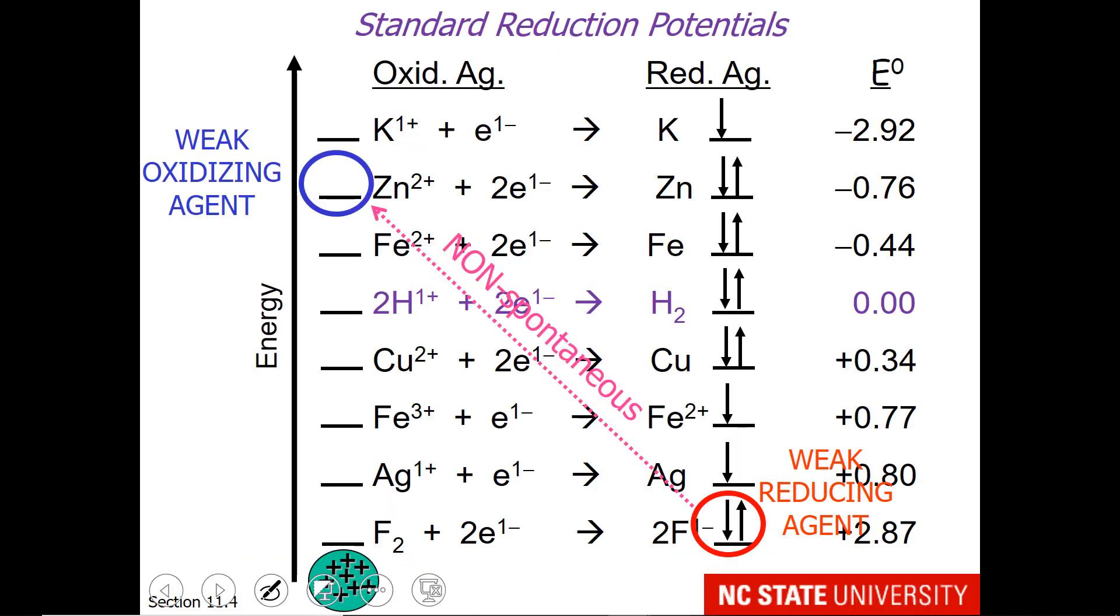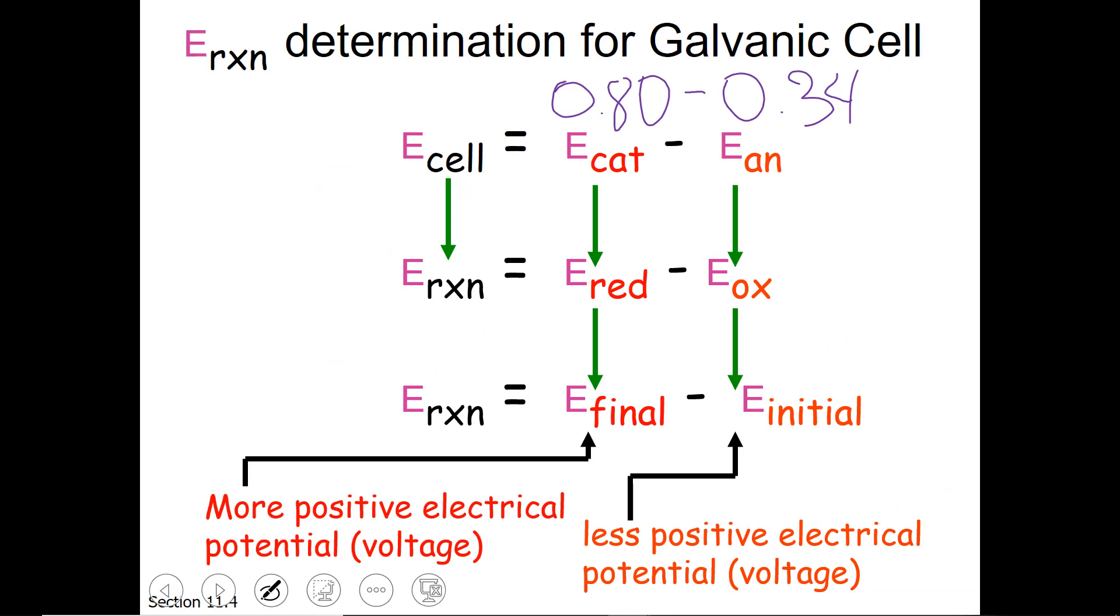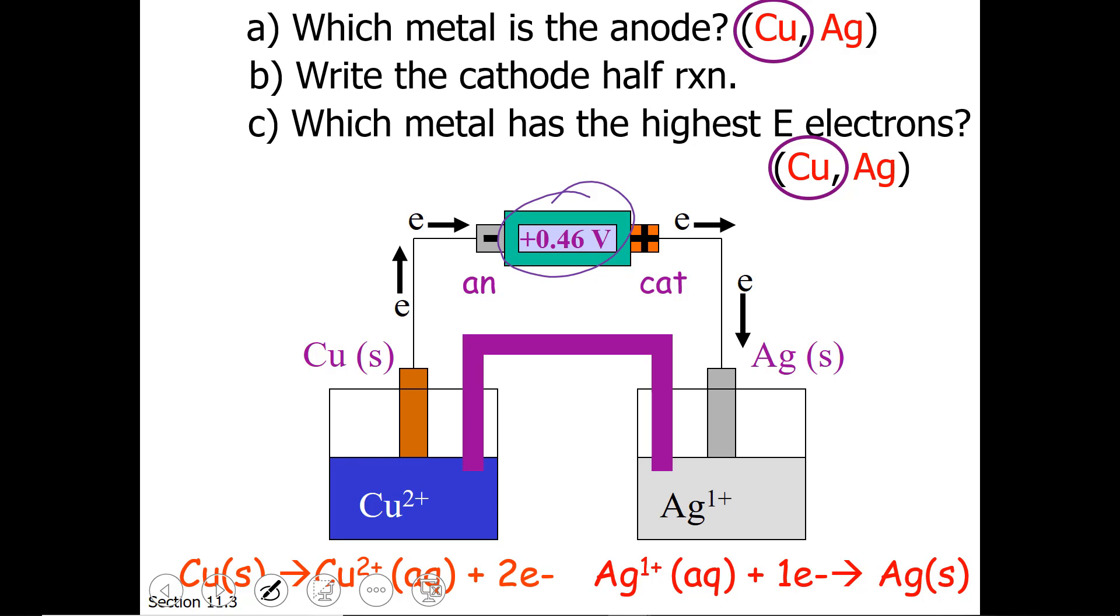If I were to answer this question for the cell in question, we are working with copper, which has a reduction potential of plus 0.34 volts, and silver, which has a reduction potential of plus 0.80 volts. So substituting our values, we would have 0.80 minus 0.34, and that adds up to 0.46 volts, a positive voltage, which means a spontaneous galvanic cell.